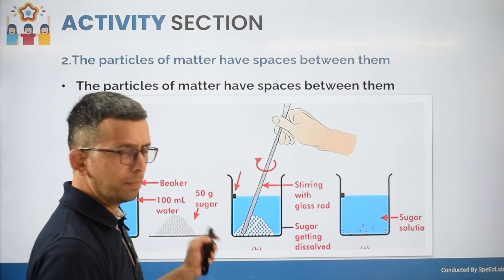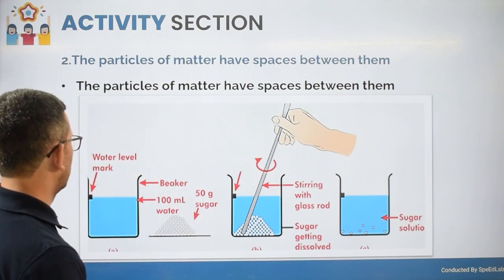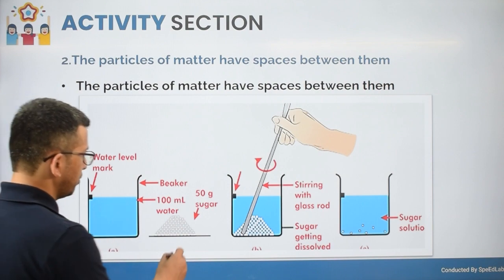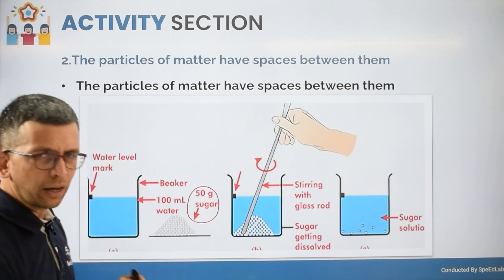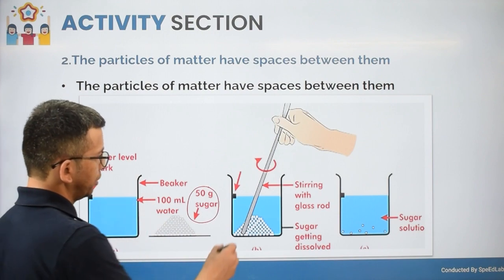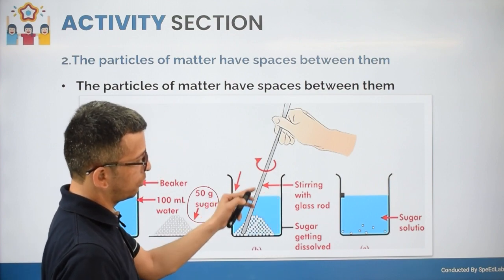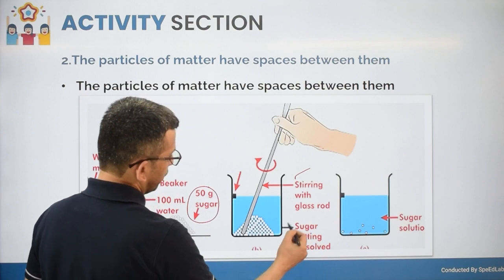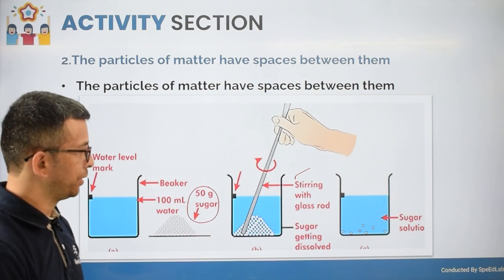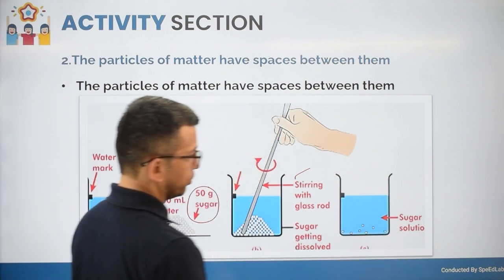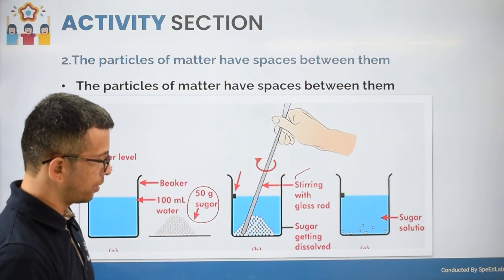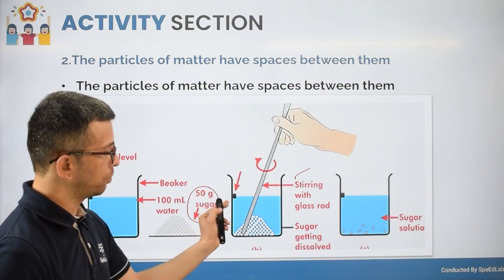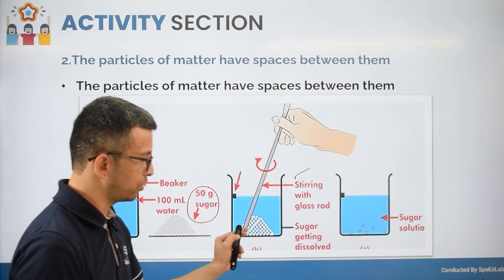Now, particles of matter have space between them. To prove this, I take a glass beaker with 100 ml of water and dissolve 50 grams of sugar in it, mixing well with a glass rod. The sugar gets completely dissolved. This is possible because water molecules have spaces between them, and the sugar molecules occupy those spaces.